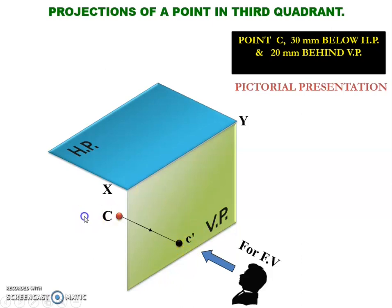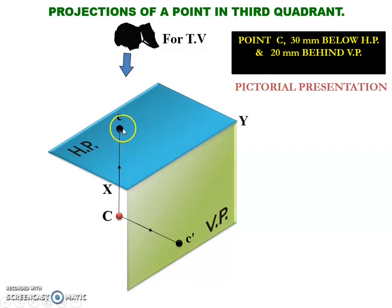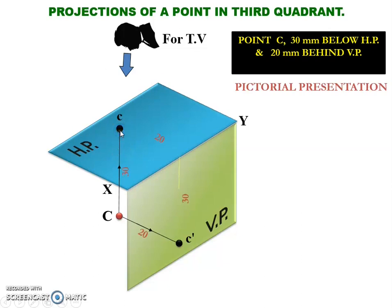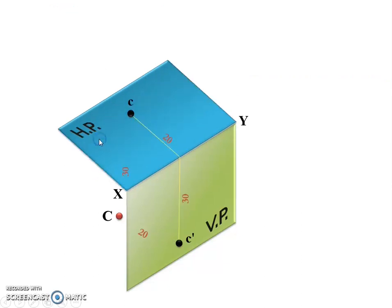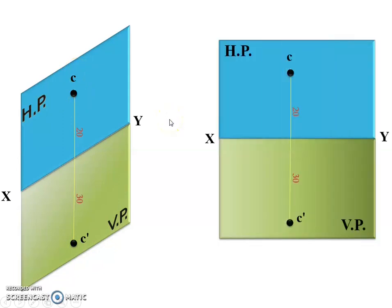In the same way, to get the top view of this particular point, we need to observe the point from the top and project it onto the horizontal plane, and name this projected point as small letter C. After getting this top view point on the horizontal plane, we need to rotate this horizontal plane along with point C 90 degrees clockwise. We will get the final solution like this, and the same thing needs to be represented on a 2D paper.